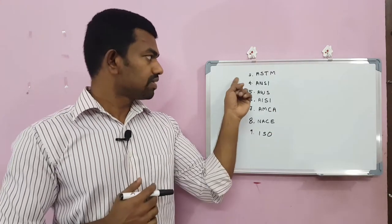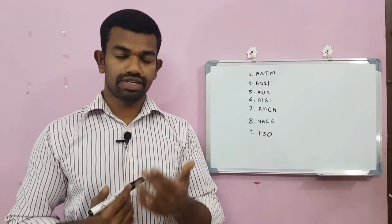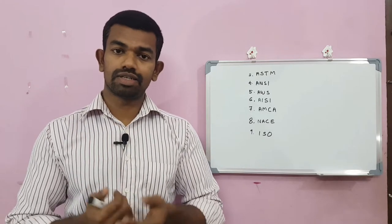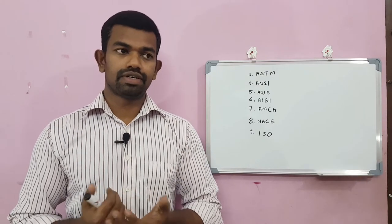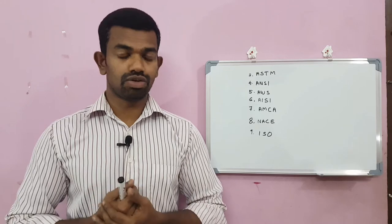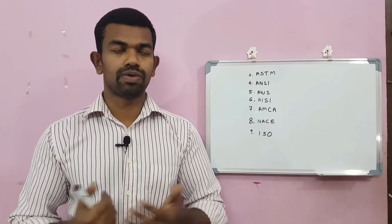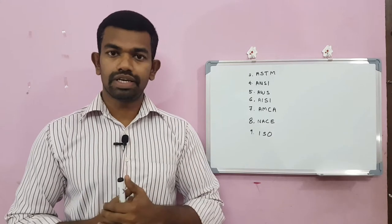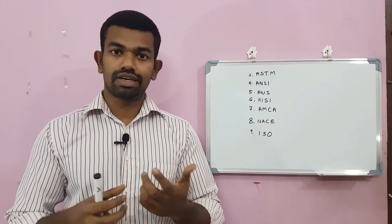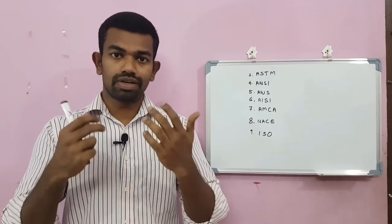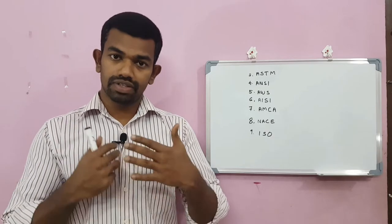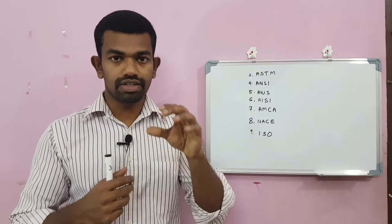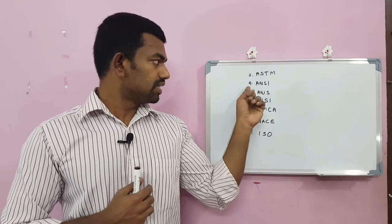ASTM — American Society for Testing and Materials — is primarily for materials and chemical composition. It describes the carbon percentage, molybdenum content, and other chemical properties for the many types of materials used, such as carbon steel and stainless steel.